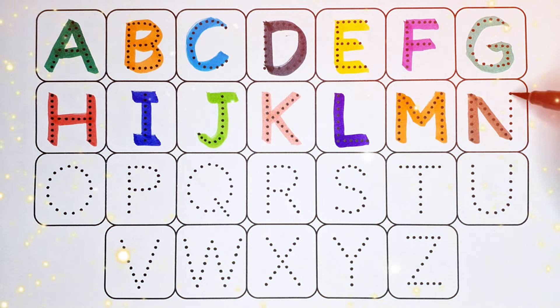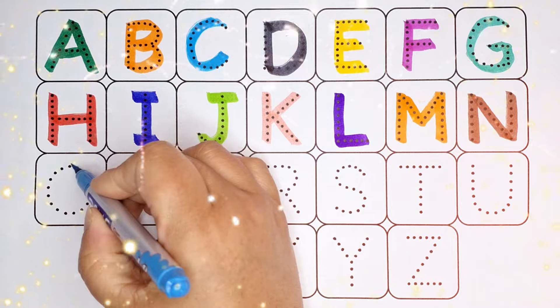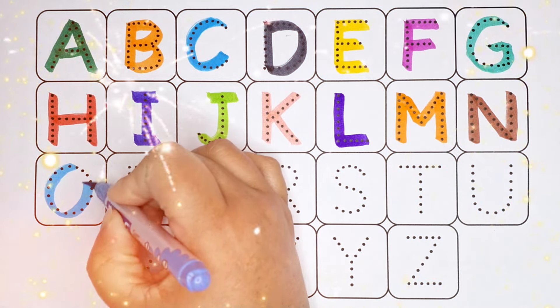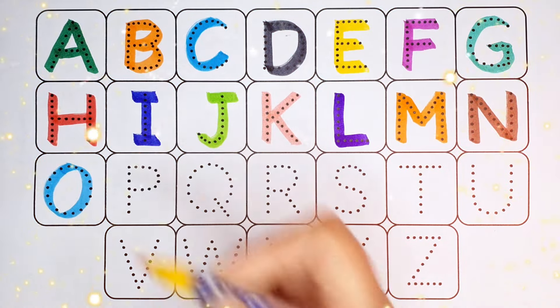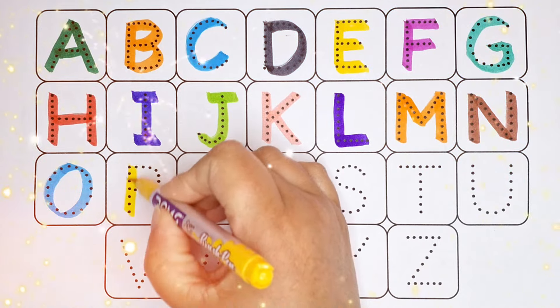Brown color N, N for net. Sky blue color O, O for octopus.